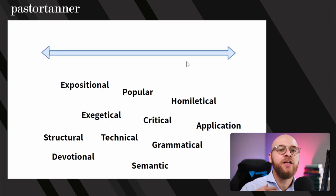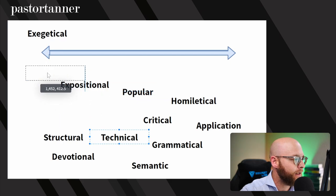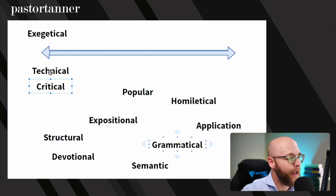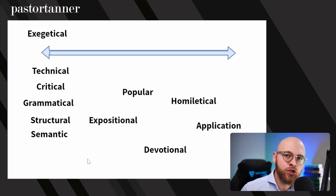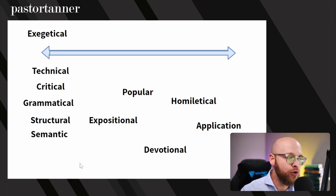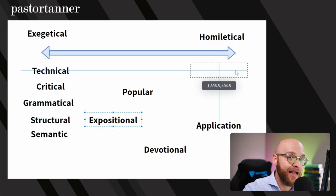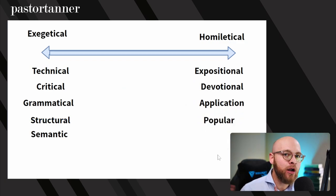If you map these on a continuum, you begin to realize that they simply form a spectrum of commentaries. On the one hand, you have your exegetical commentaries. Other words for this are technical, critical, grammatical, structural, or semantic — all of these buzzwords indicate a certain type of commentary. On the other end, you hear buzzwords like homiletical, expositional, devotional, application, or popular. When you hear those words, you know you're on the other end of the spectrum.